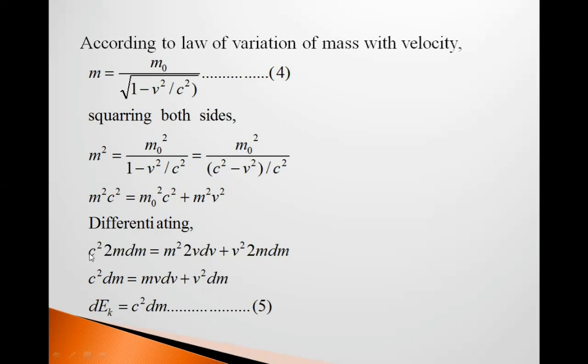Differentiating this, c square 2m dm is equal to m square 2v dv plus v square 2m dm. So c square dm is equal to mvdv plus v square dm. So dEk is equal to c square dm, equation 5. We get finally dEk.